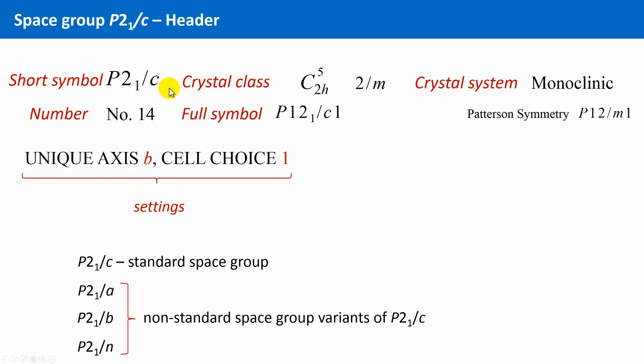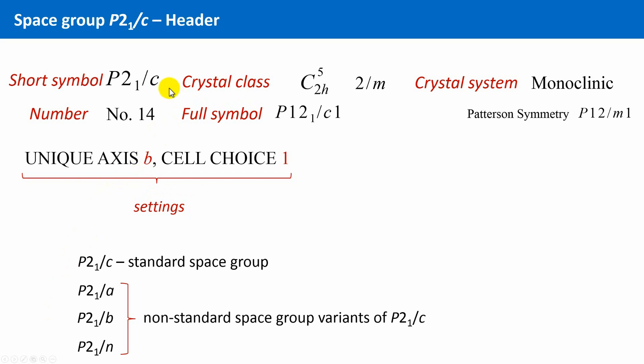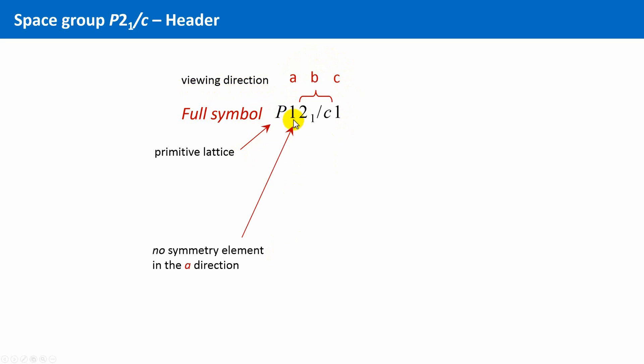Second, in contrast to the space group PMM2, here the short and full notation differ. Let's look at the full symbol. The full symbol consists always of four symmetry specifications. First, again, the Bravais lattice type is specified, primitive, and then the symmetry elements that occur in three directions are specified, along A, B and C. Along the first direction, there is no symmetry element, and this is given as 1, identity. Along the B direction, there are two symmetry elements, a 2-1 screw axis parallel to the B direction, and a glide plane C perpendicular to the B direction. And finally, the circumstance that there is no symmetry element in the third viewing direction is also explicitly stated, again with a 1.